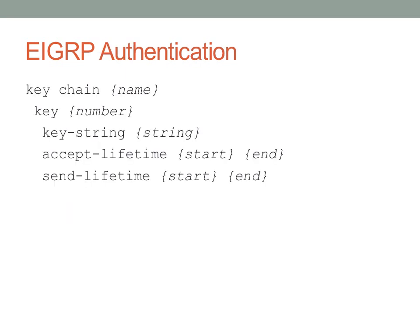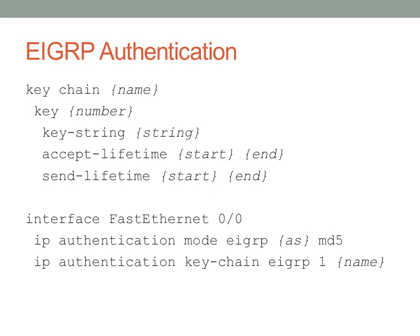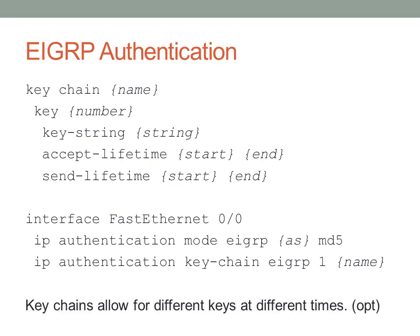Authentication for EIGRP works differently — you use what's called a keychain. A keychain holds a number of keys, each assigned a number. Each key has a key string, an accept lifetime, and a send lifetime. As time progresses, routers cycle through different keys on the keychain, so it's recommended to configure three or four keys and rotate between them. These keys are applied on the interface using 'ip authentication mode eigrp', the autonomous system number, and the hash type (e.g., MD5), followed by 'ip authentication key-chain eigrp' and the keychain name. This key rotation feature is a useful but not commonly known iOS feature.